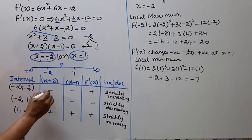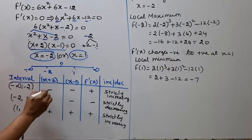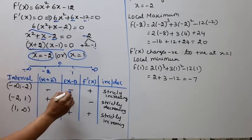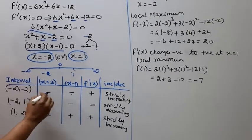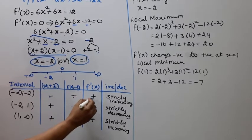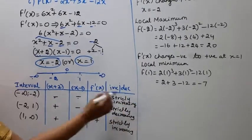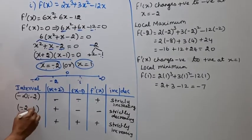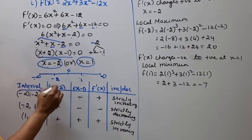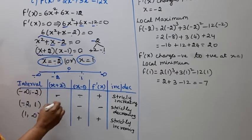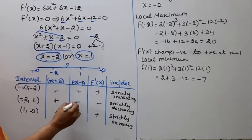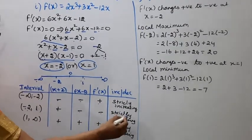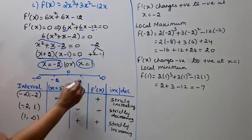Suppose minus 3, plus 2 is minus, minus 3 minus 1 is negative. Minus into minus is plus, plus 1. Strictly increasing. Minus 2 to 1, 0 plus 2, plus 0 minus 1 minus, plus into minus is minus. Strictly decreasing.